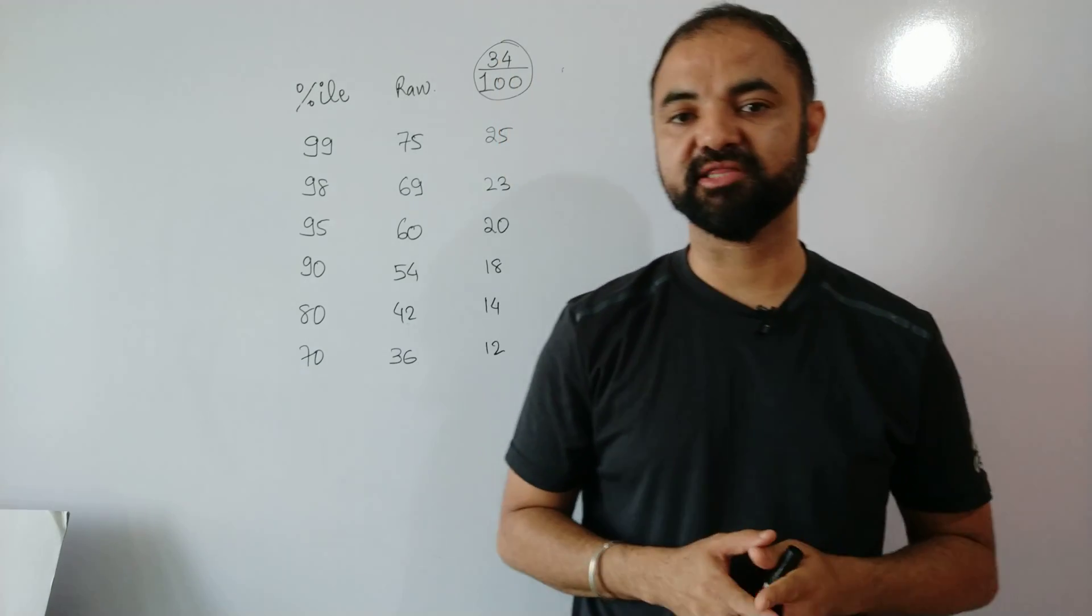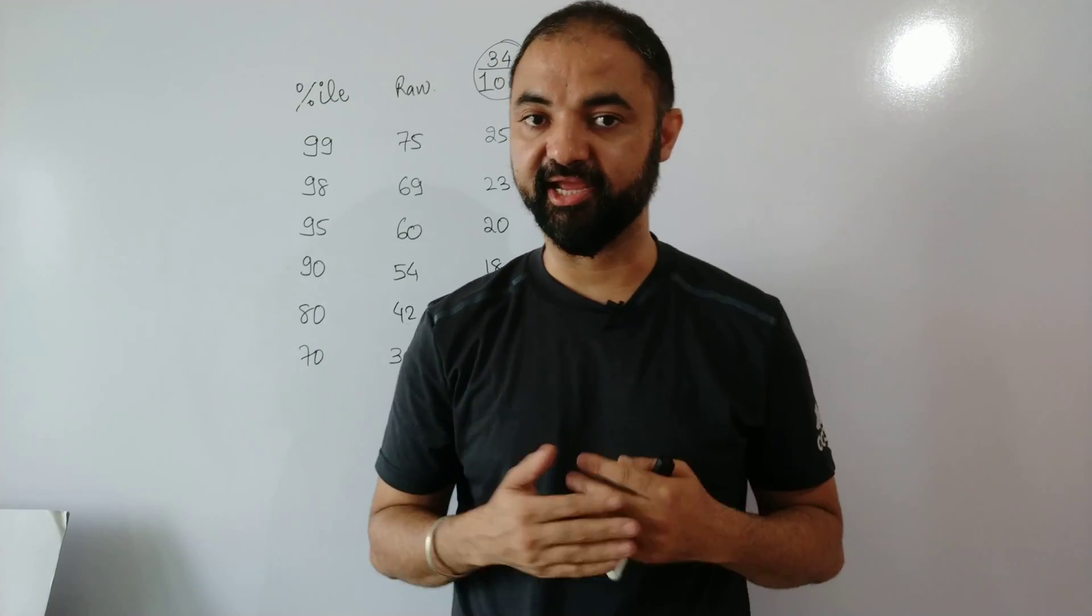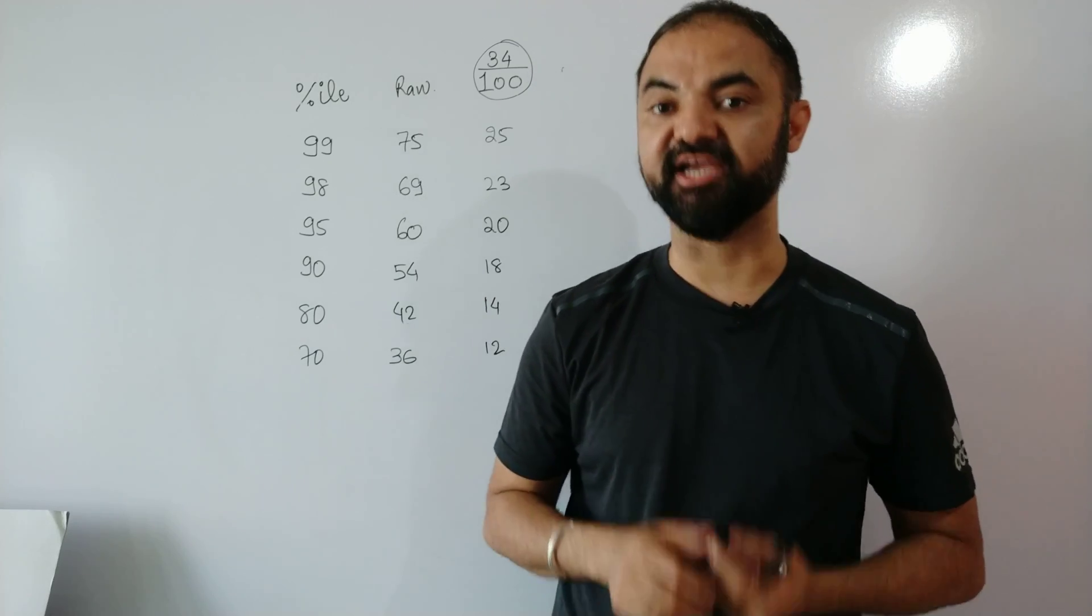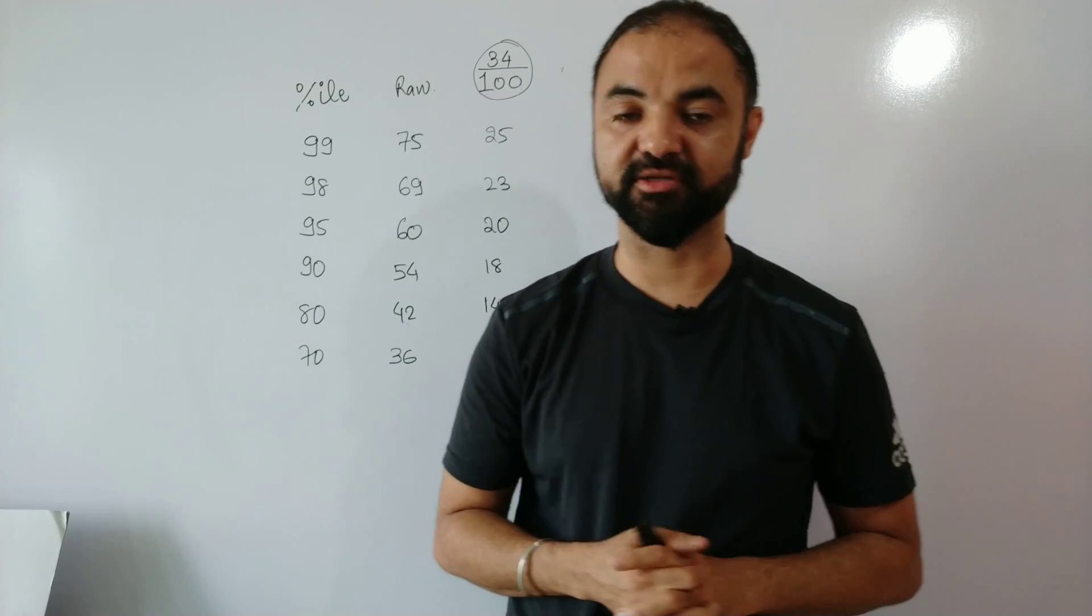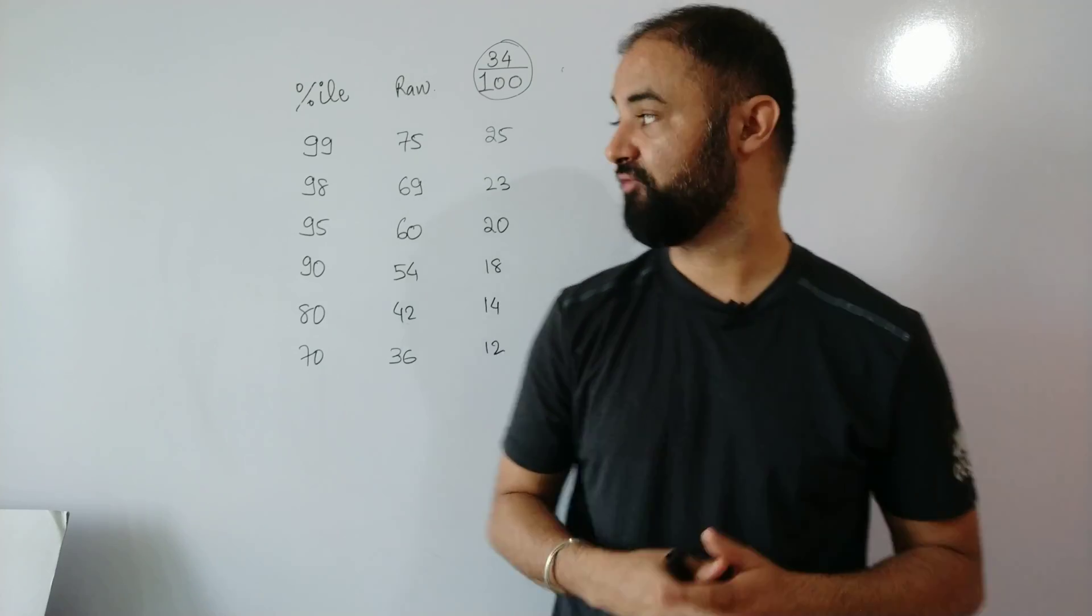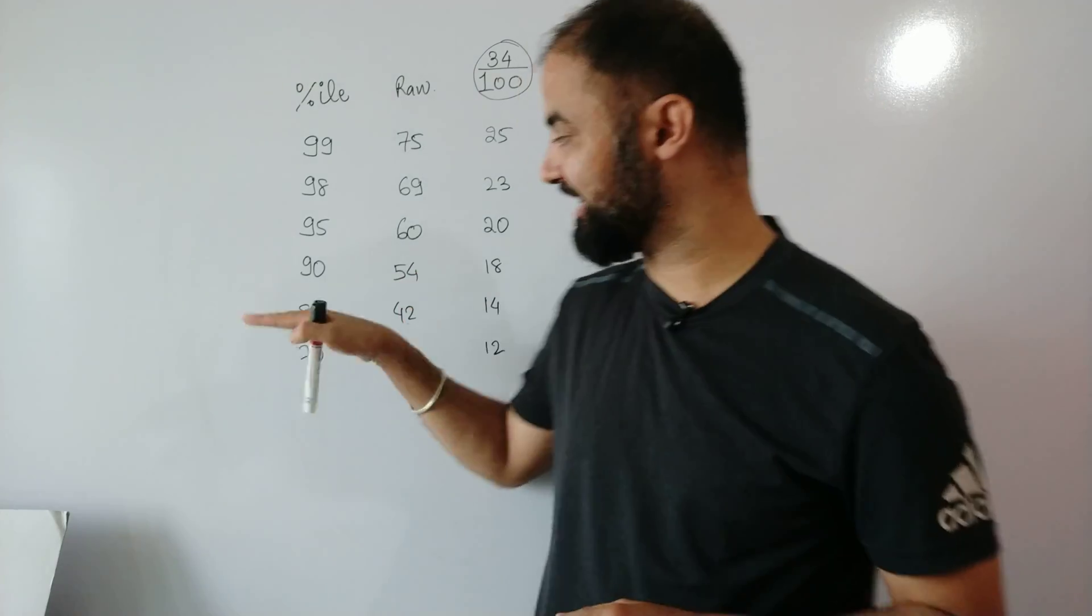Hi guys, in this video we'll talk about the verbal session, how much you need to target and at what score you'll get what percentile. Percentile is a very scary term - 99 percentile, 99.9 percentile - but when you talk about the marks it becomes very easy to understand. In this video we'll talk about the 70 to 99 percentile range, at what score you will get what college and at what percentile.